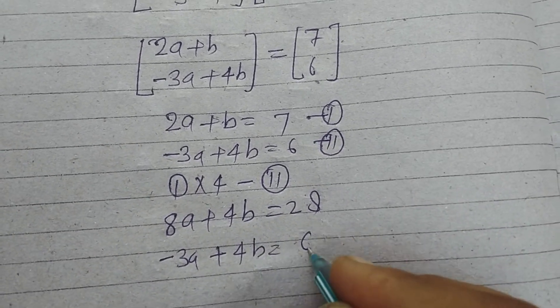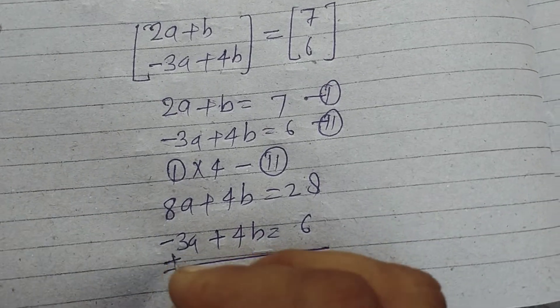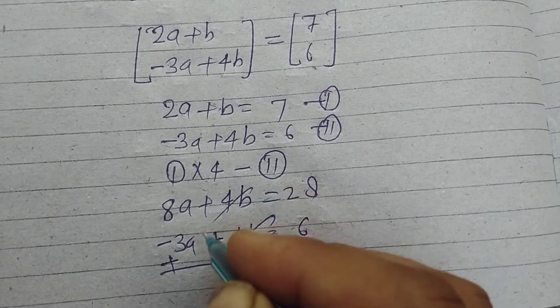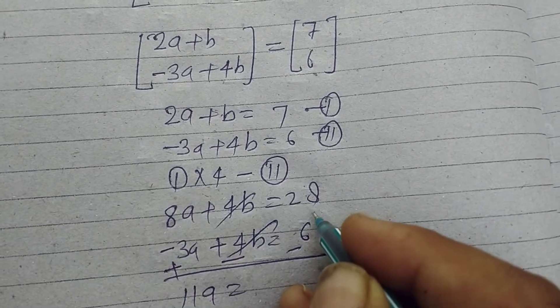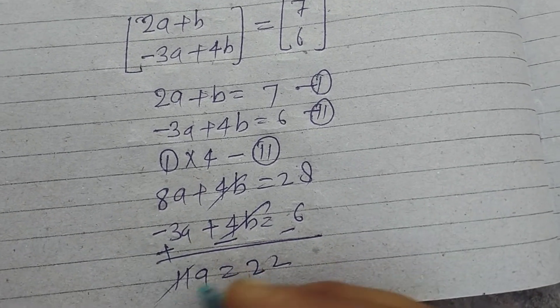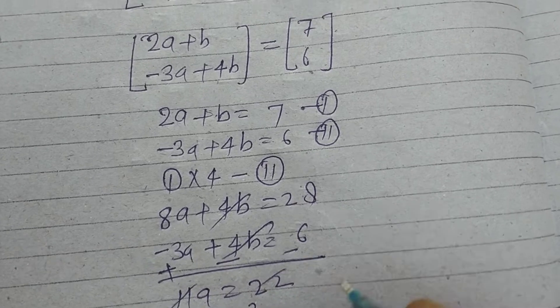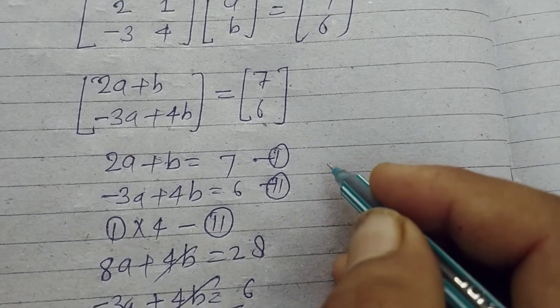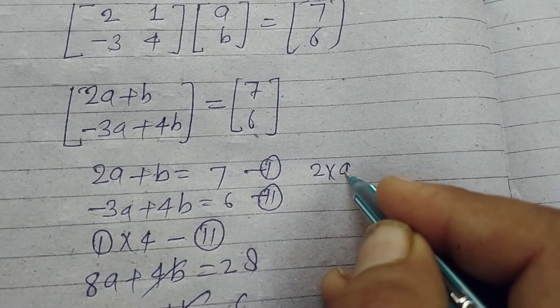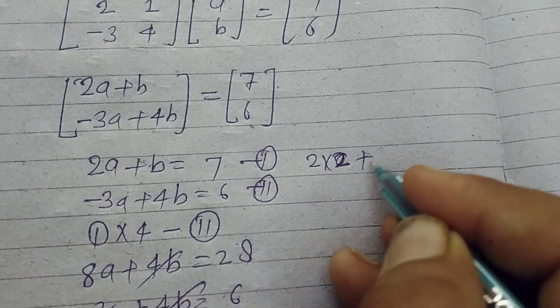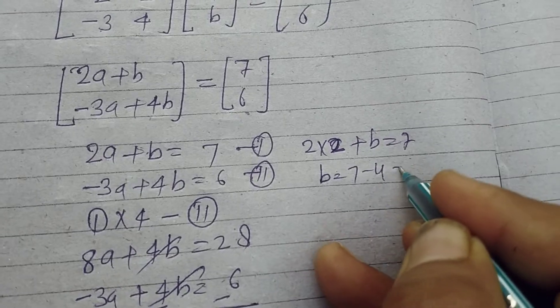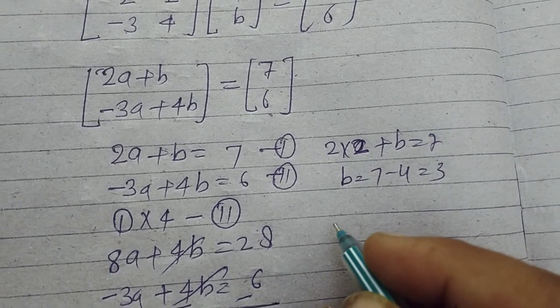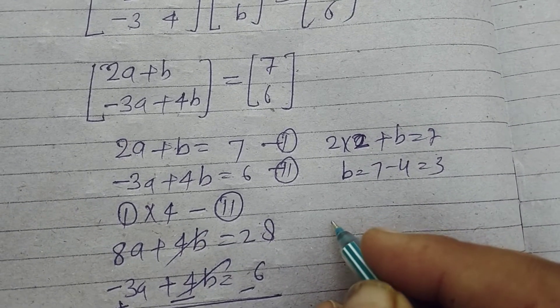Subtracting - plus minus minus, this cancels out. We get 11a equals 22, so a equals 2. When a equals 2, we put here: 2 times 2 plus b equals 7, so 4 plus b equals 7, b equals 7 minus 4 equals 3.